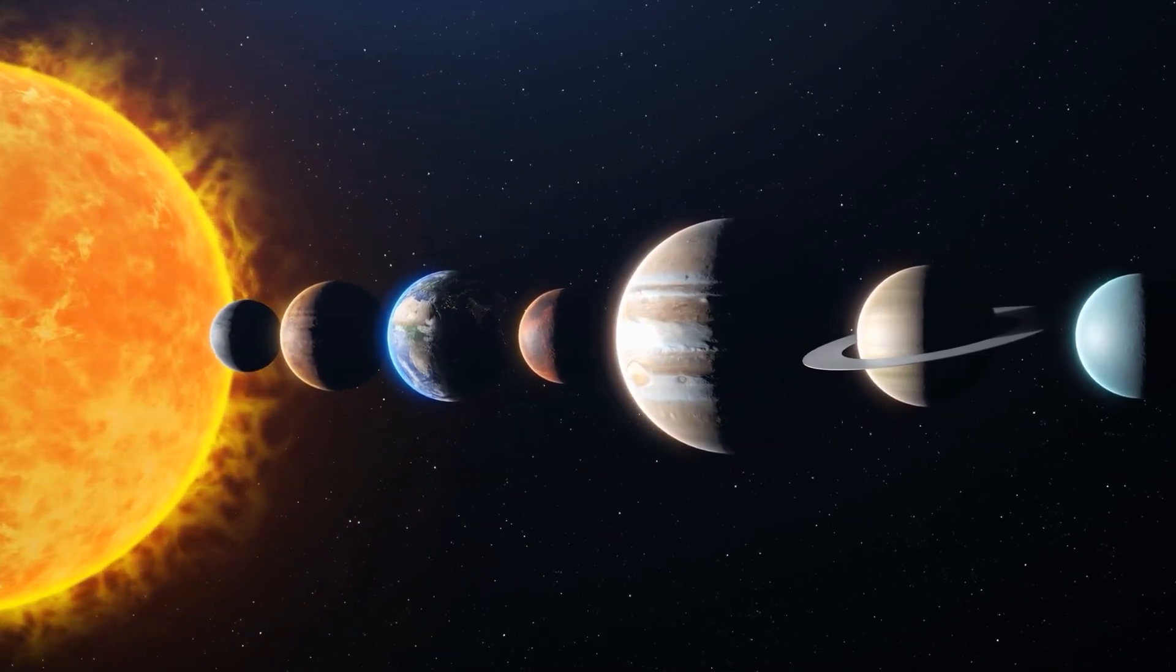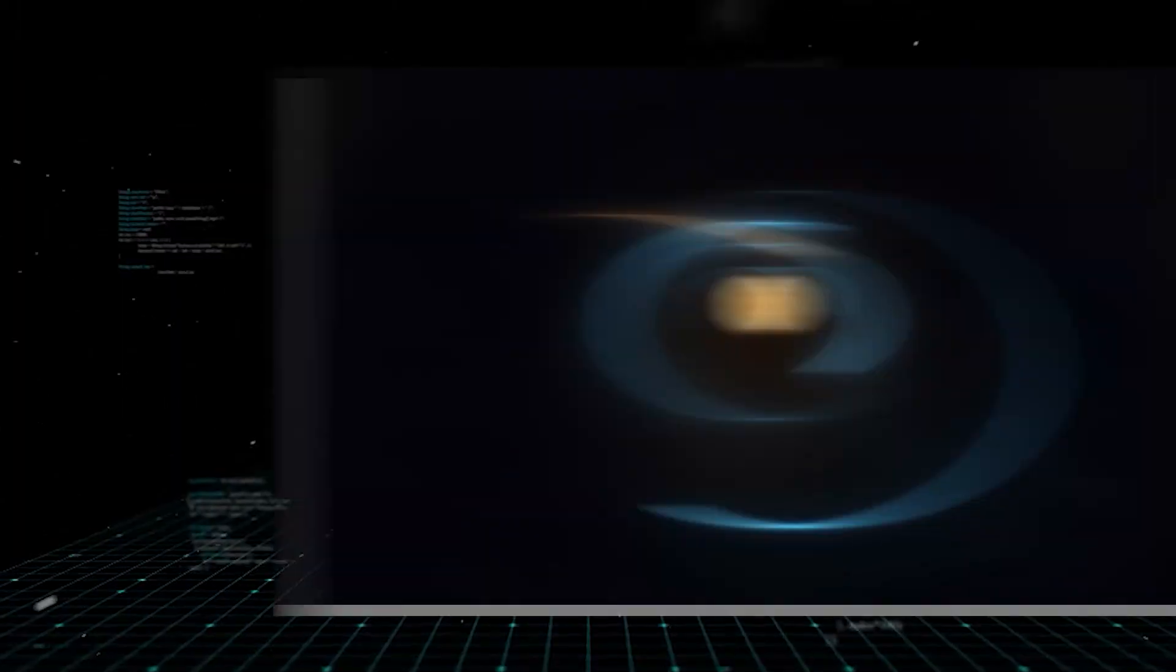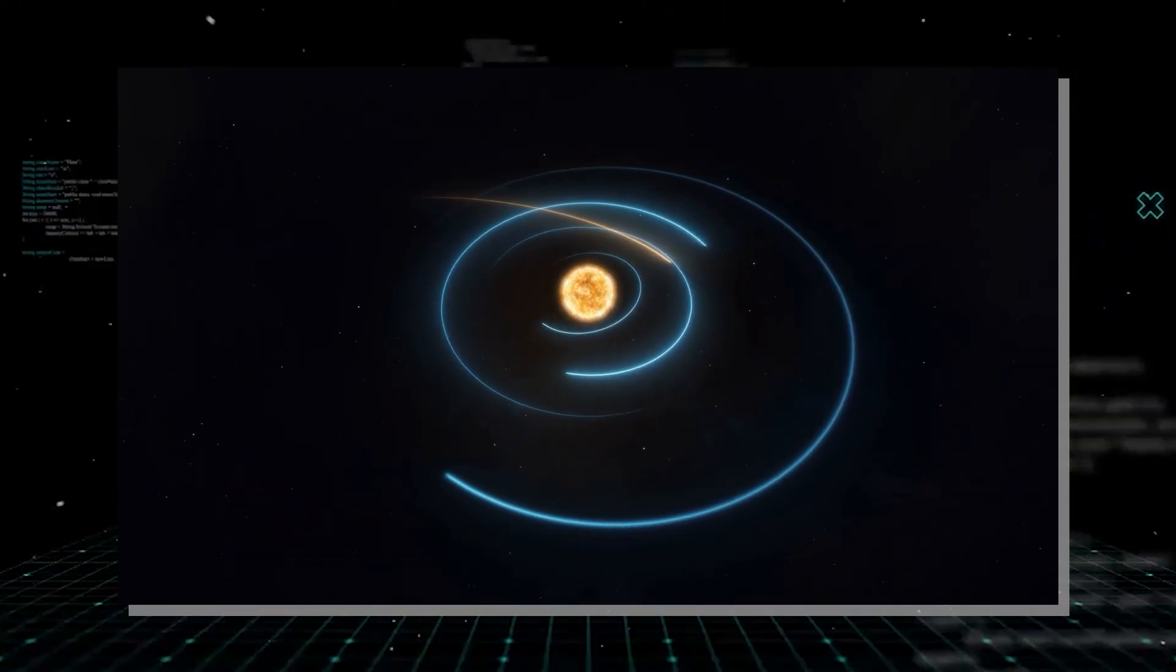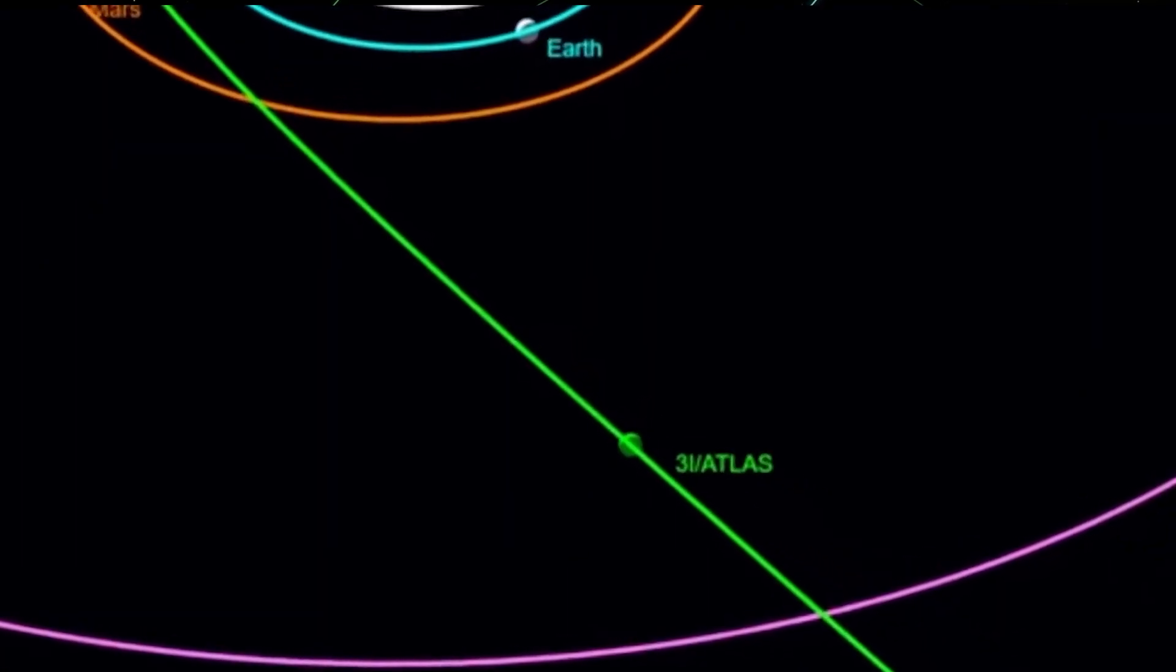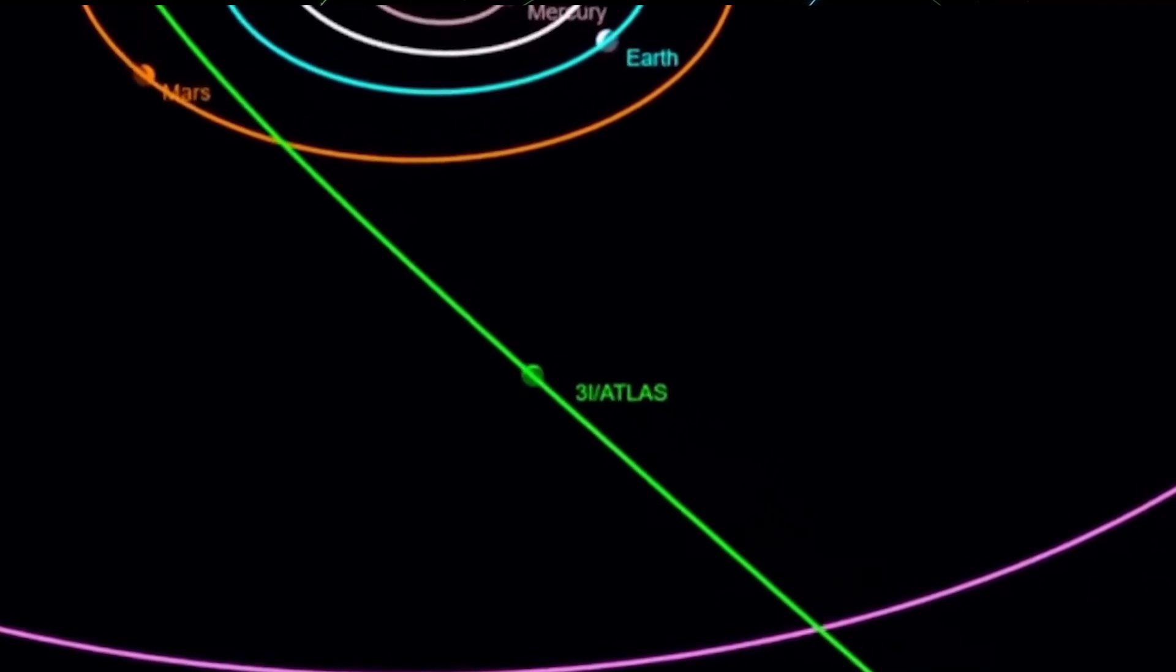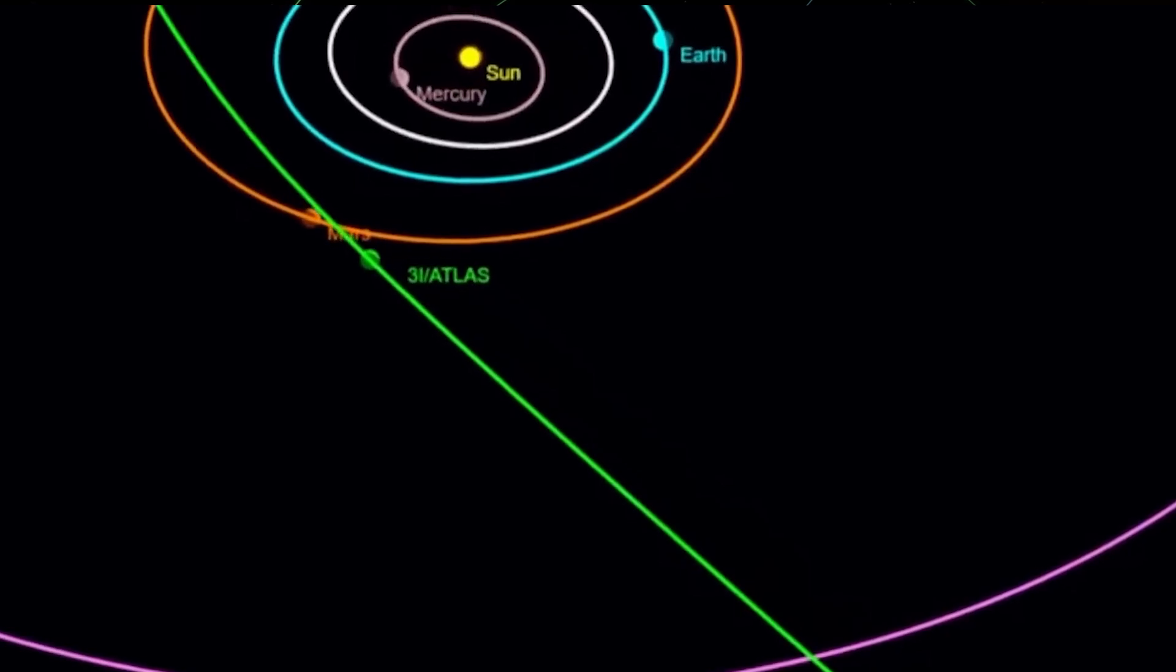An eccentricity greater than 1 signifies an unbound, hyperbolic trajectory. 3I Atlas' value of over 6 makes its path appear almost straight, slicing through our solar system with a precision that defies easy prediction.